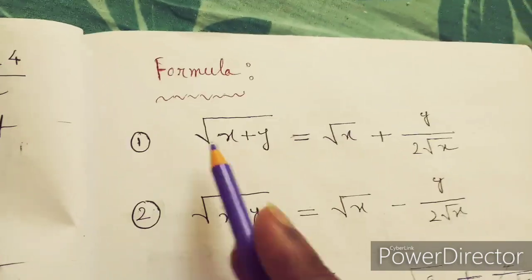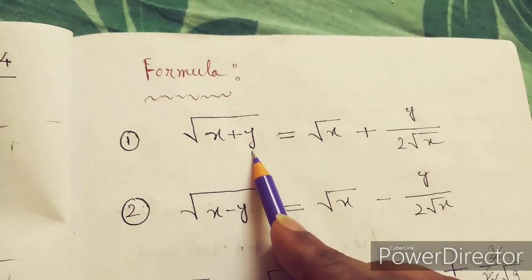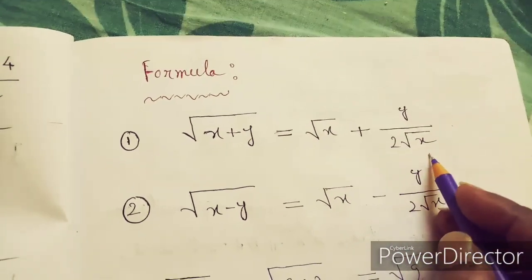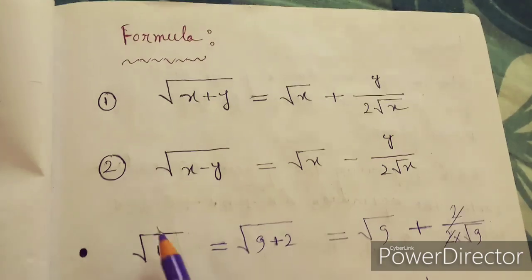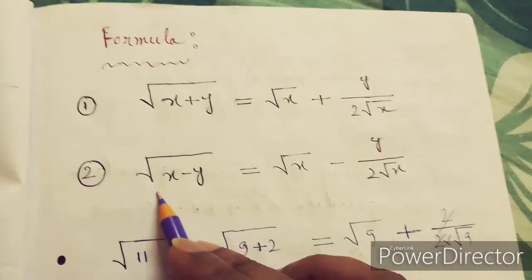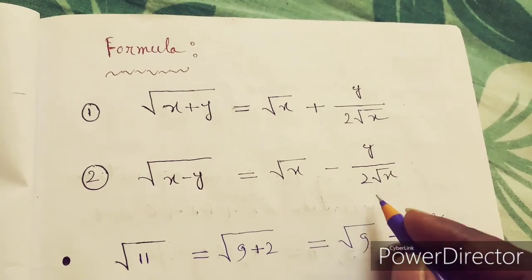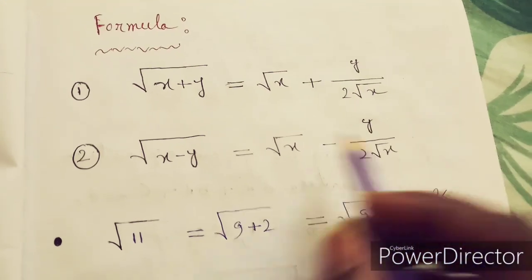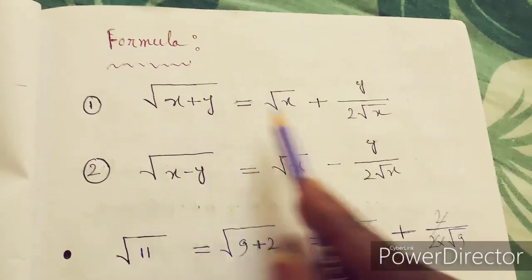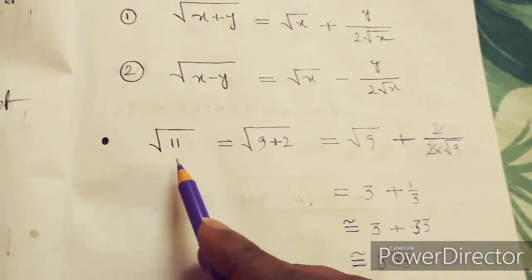Today we start with two formulas. Formula one: √(x+y) = √x + y/(2√x). Formula two: √(x-y) = √x - y/(2√x). Since there is a minus sign in the second formula, it uses a minus sign, and since the first has a plus sign, it uses a plus sign.